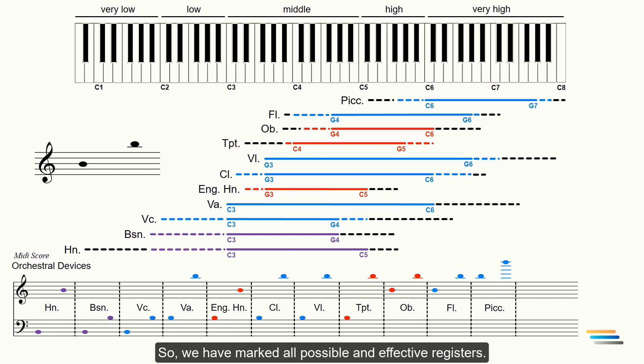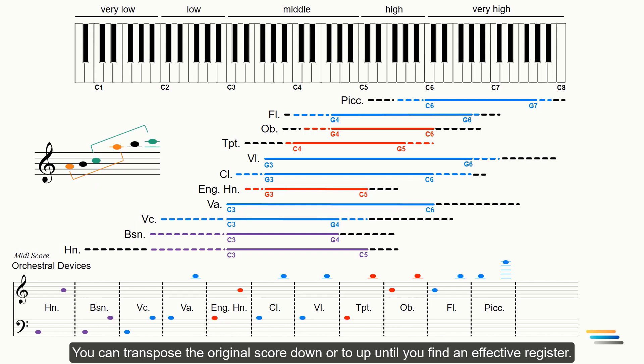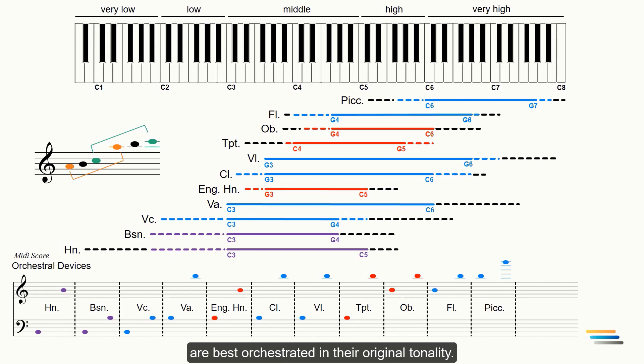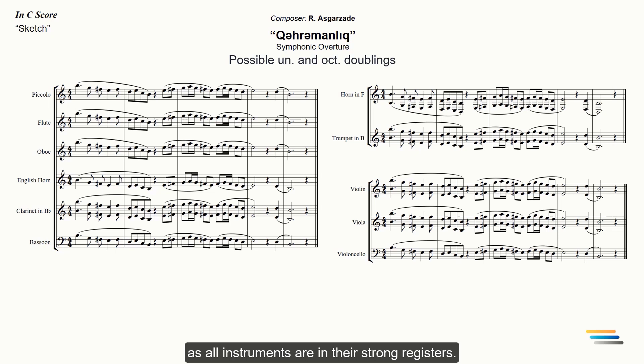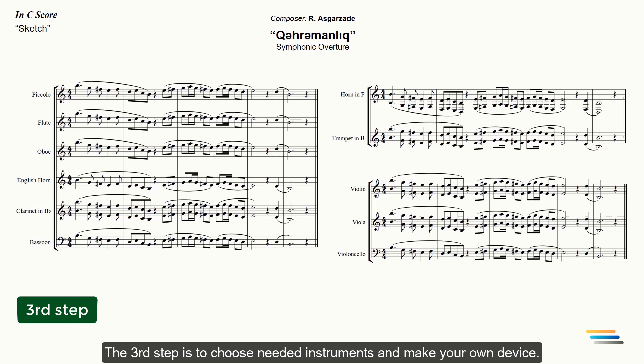If the melody is low or high and doesn't support this chart, then you can transpose the melody to other tonality. This rule will be effective especially in choral music and in film music. You can transpose the original score down or up until you find an effective register. However, some musical genres such as prelude and fugue are best orchestrated in their original tonality. So, any combination of these instruments will give you balanced devices as all instruments are in their strong registers.